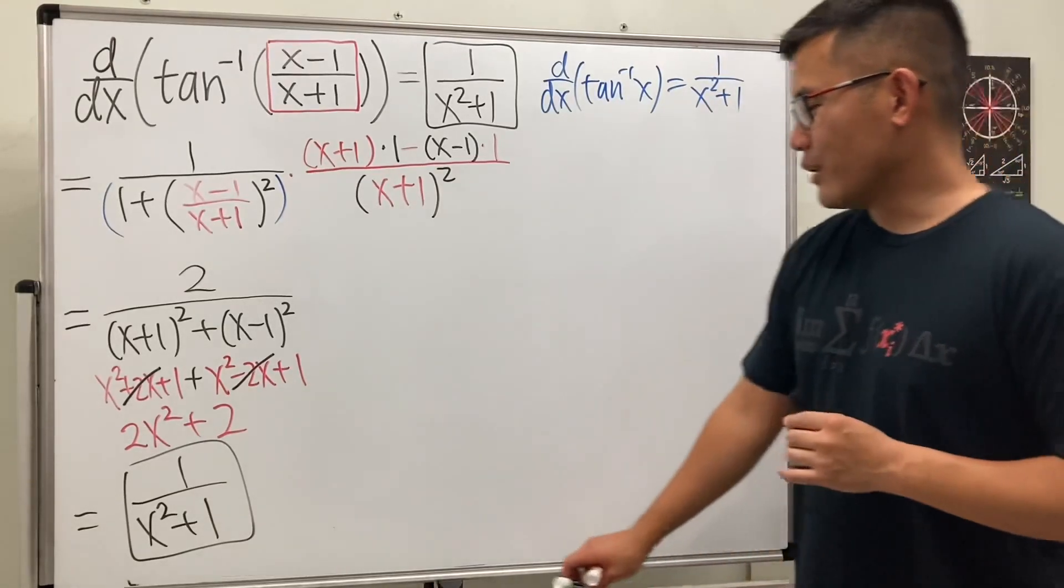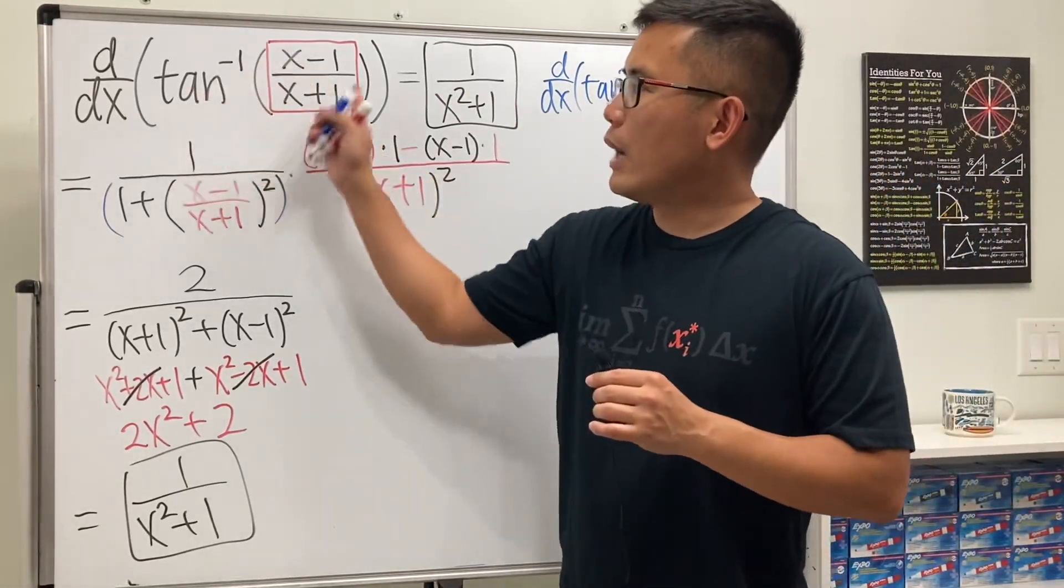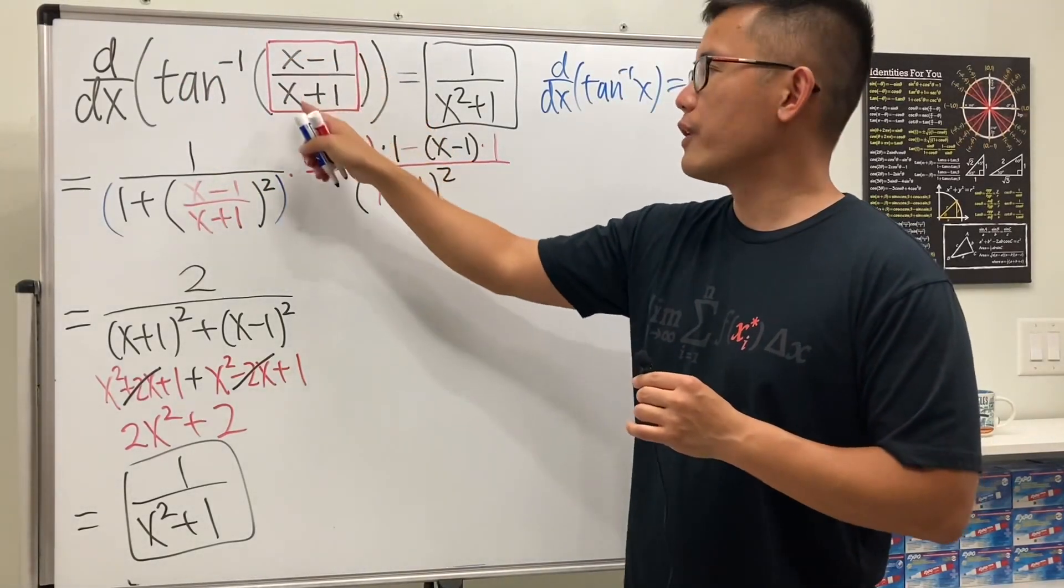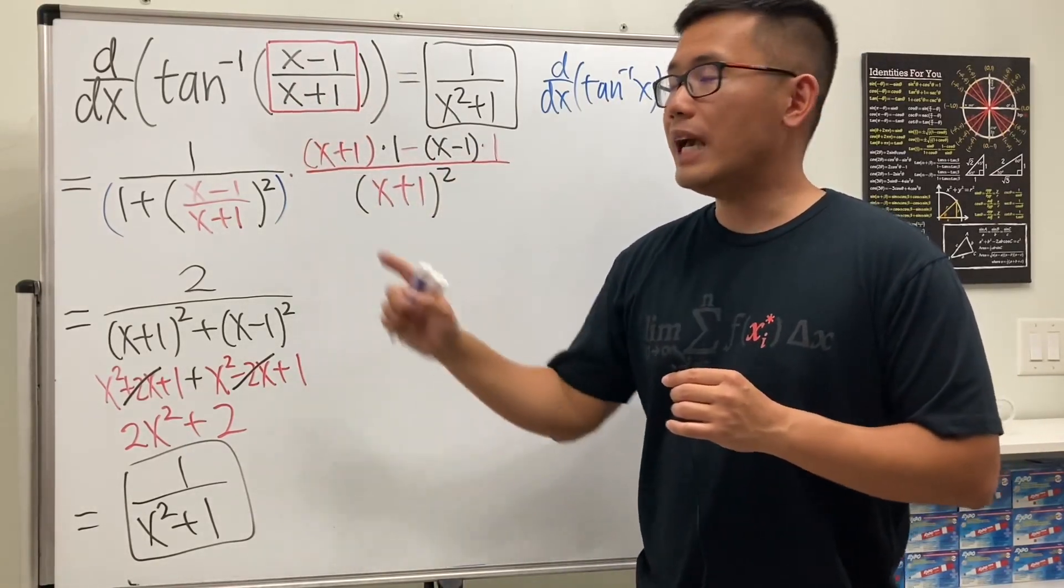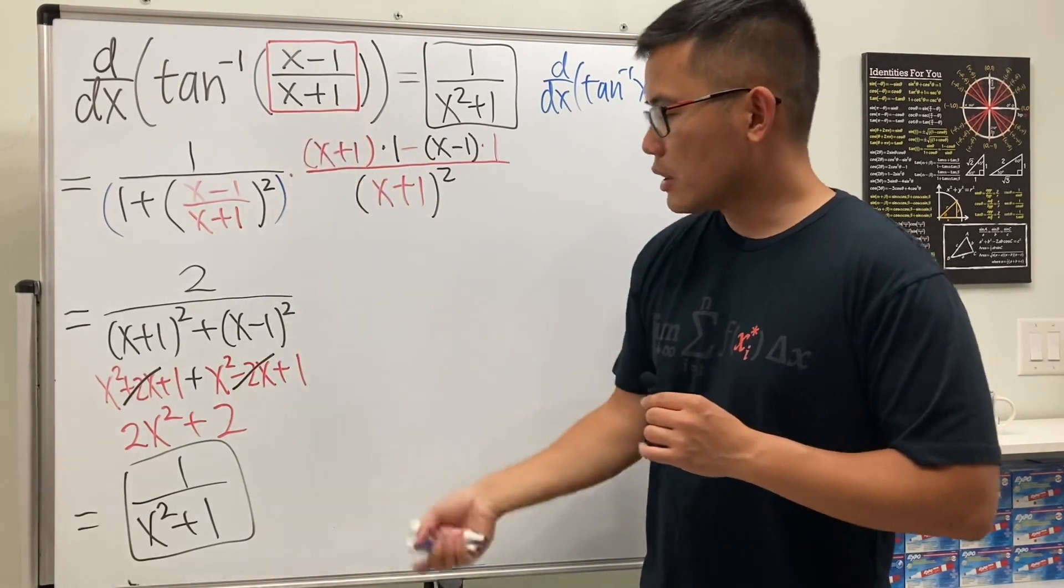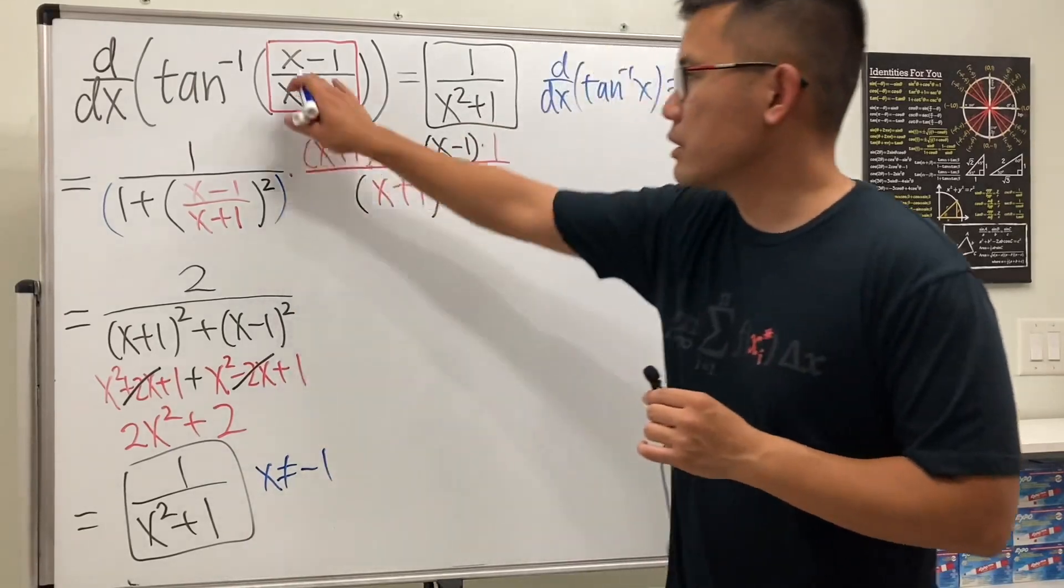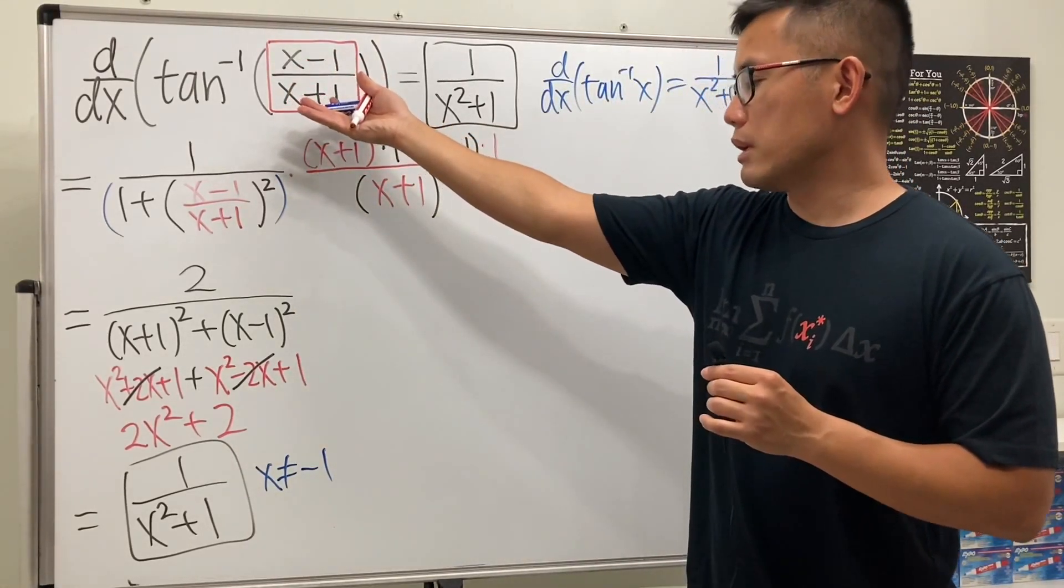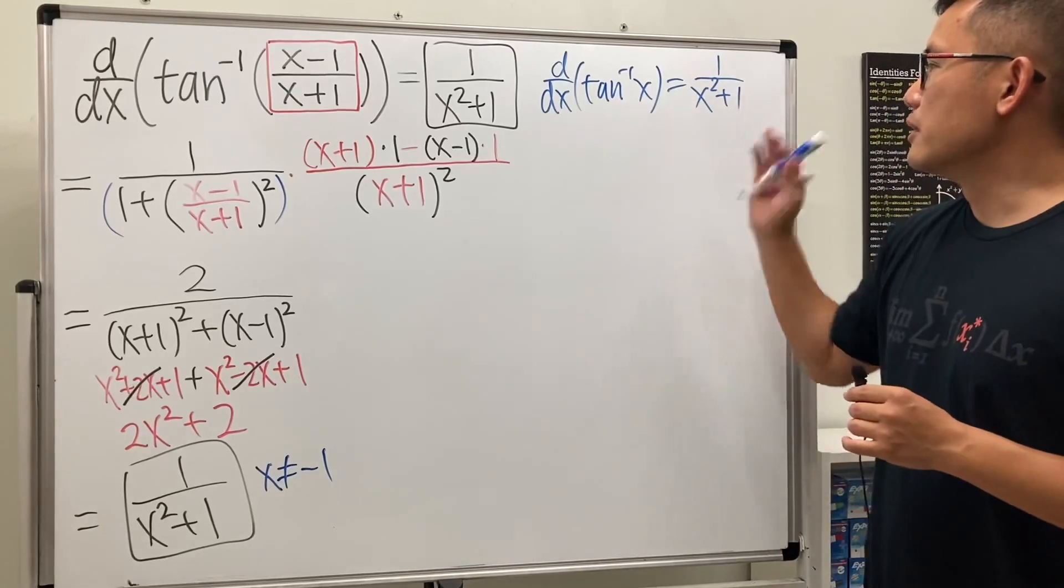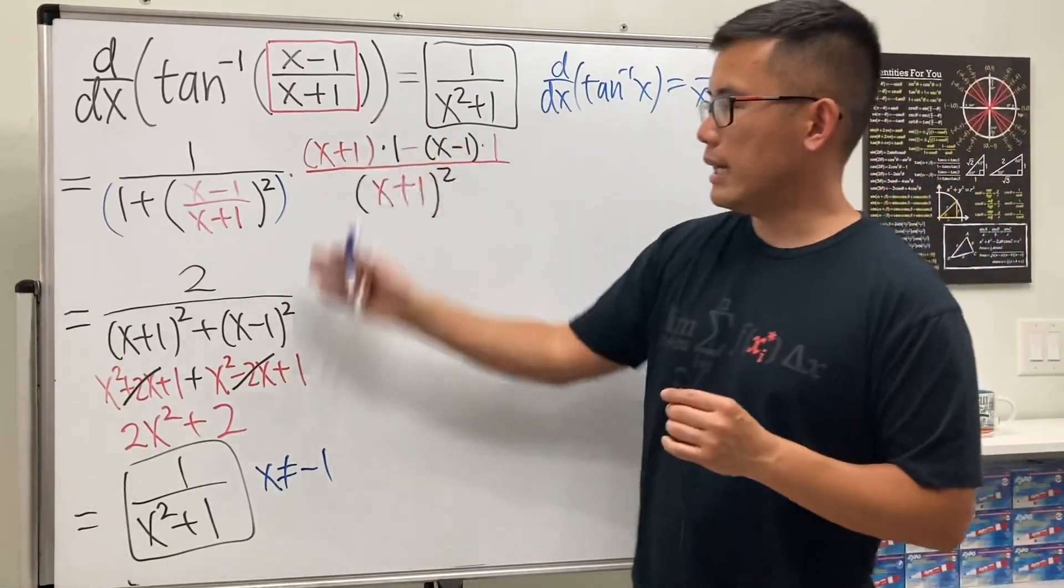So firstly, let's talk about why did I say, this is not entirely true. Well, we have to go back to how we write the function. We have the x minus 1 on the top, over x plus 1. And because we have that x plus 1 on the bottom, we cannot plug in x equal to negative 1. So, this right here, we have to mention that x cannot be equal to negative 1, because the domain of the function does not include negative 1.